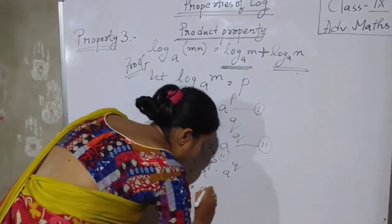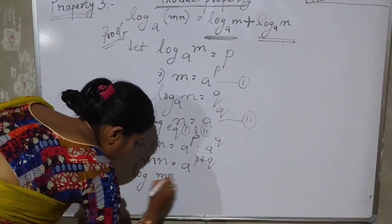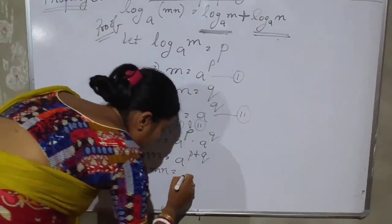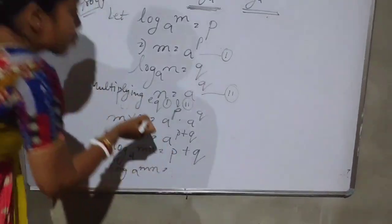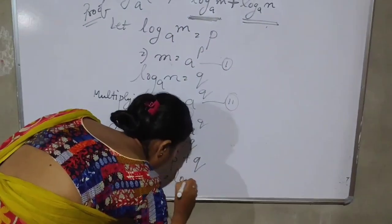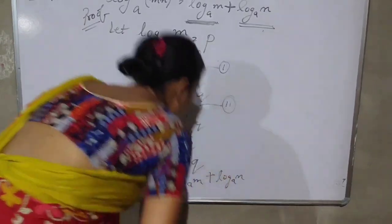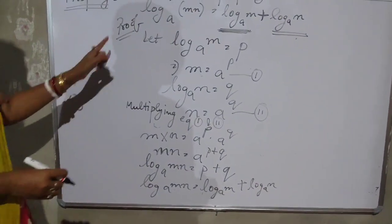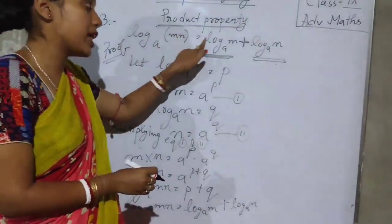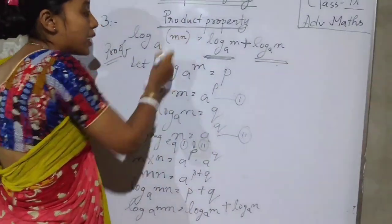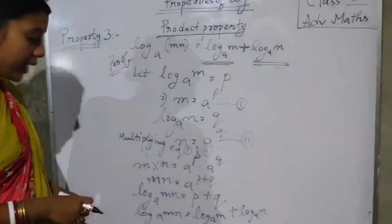Now, if we take log of this: log of M times N base A equals P plus Q. And P is log M base A, and Q is log N base A. So we have proved that log M times N base A equals log M base A plus log N base A. When two numbers are multiplied and we are taking log of those two numbers, then we can split both of them.